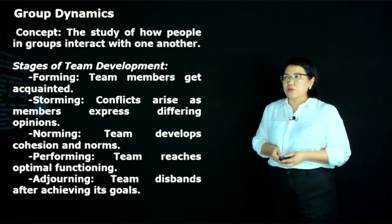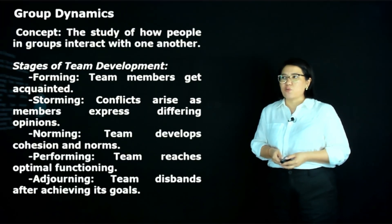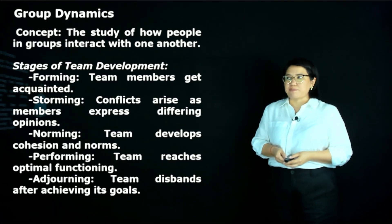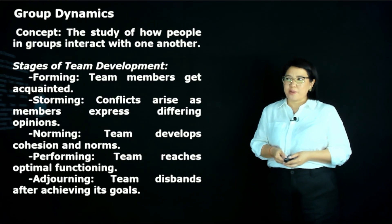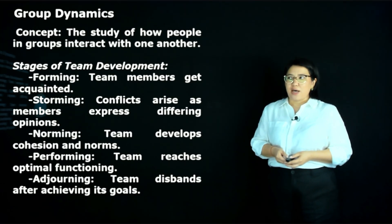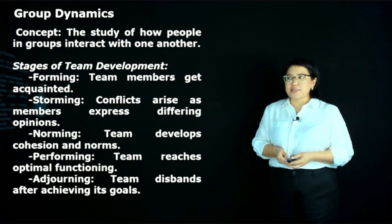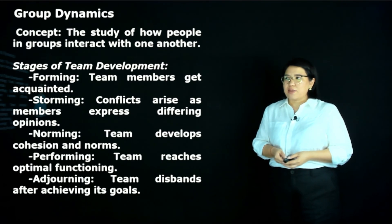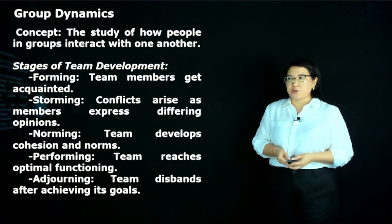Group dynamics is the study of how people in groups interact with one another. The stages of team development are: Forming — members get acquainted; Storming — conflicts arise as members express differing opinions; Norming — the team develops cohesion and norms; Performing — the team reaches optimal functioning; and Adjourning.